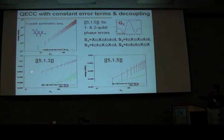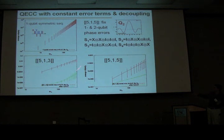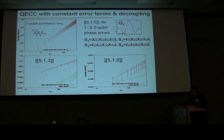For example, for the 5,1,3 code, you can reduce the error over a time of a few hundred pulse durations. You can reduce the error to the order of 10 to the minus 3, and then with the error correction at the end, you still get very nice accuracy.